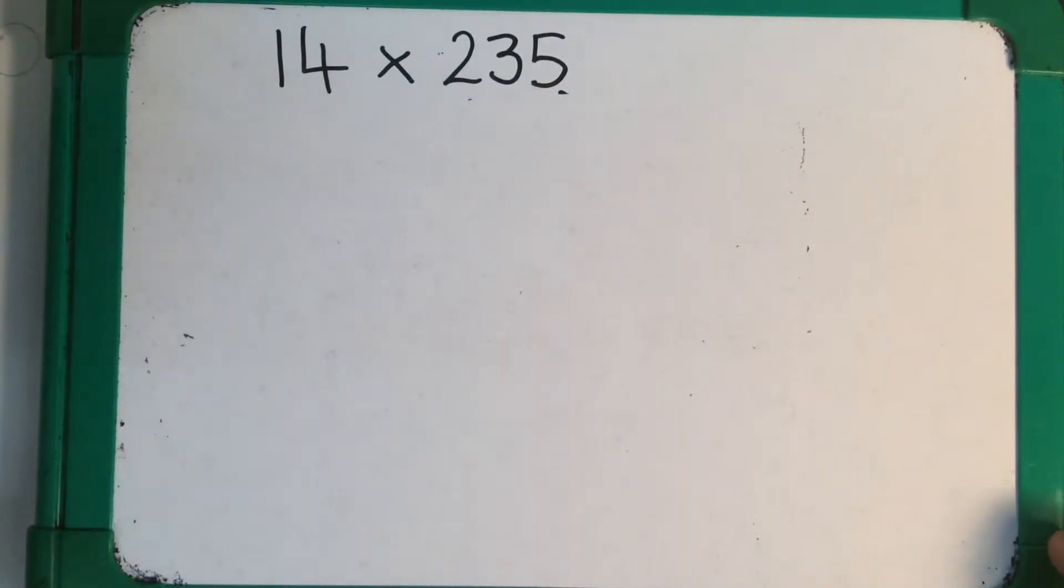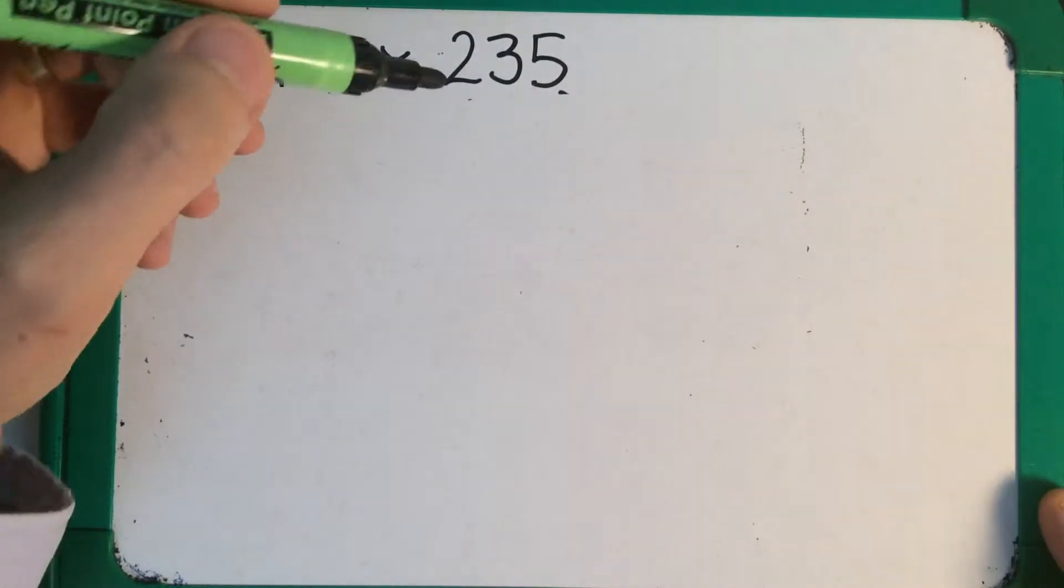Hi, this is Mr Winter. I'm going to multiply 14 by 235 using the grid method.